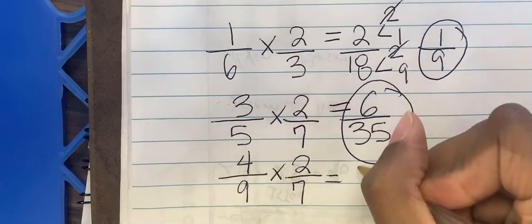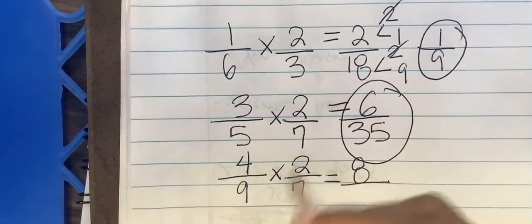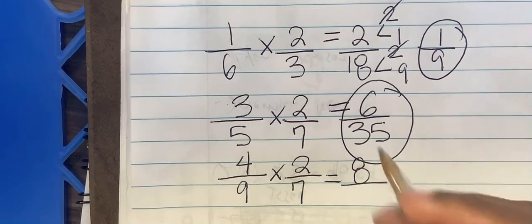So 4 multiplied by 2 is 8. 9 multiplied by 7 would be 63.